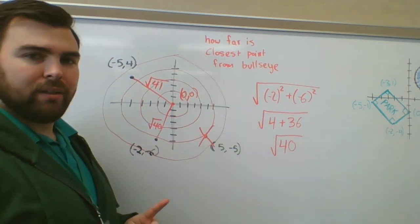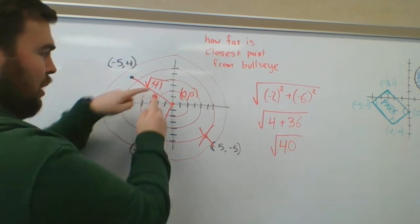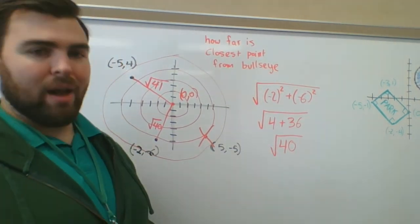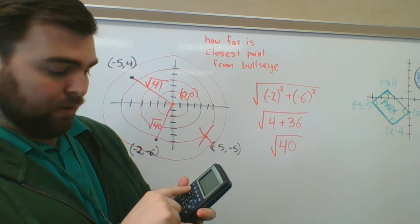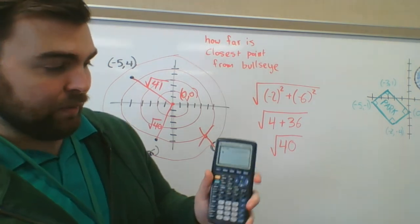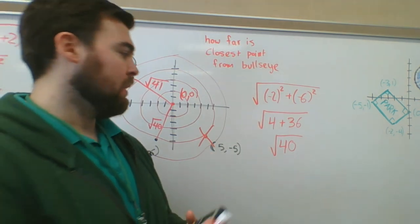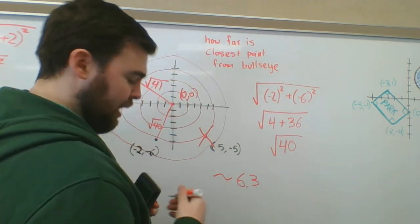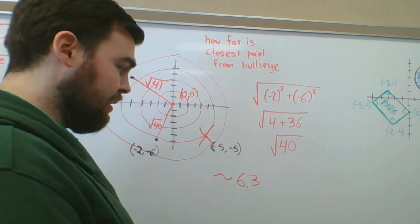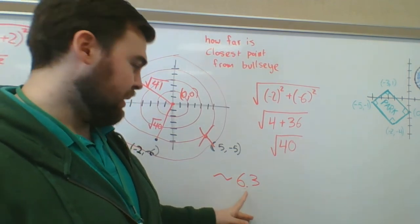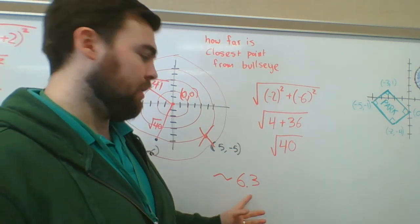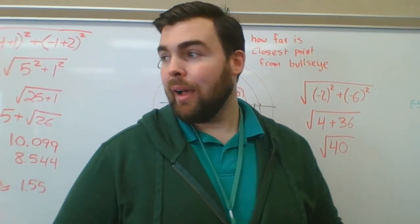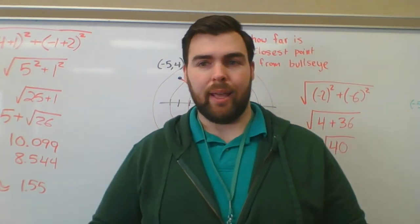A smaller distance means it's closer, so (−2, −6) is the closest dart. Using a calculator, √40 ≈ 6.324. Round it however they ask — nearest tenth is 6.3, nearest hundredth is 6.32, nearest thousandth is 6.324. That's 10.3 part one — let me know if you have any questions.